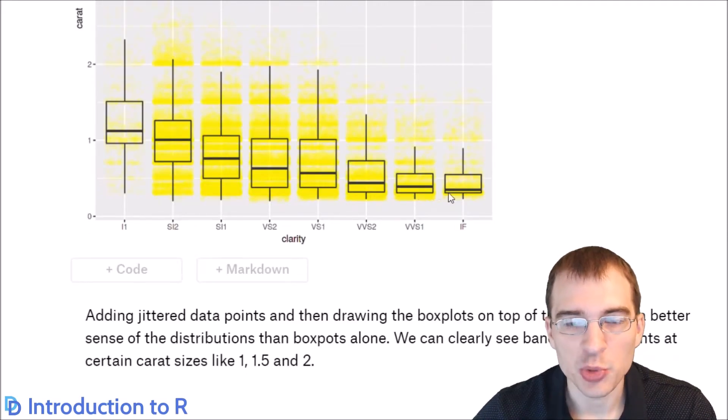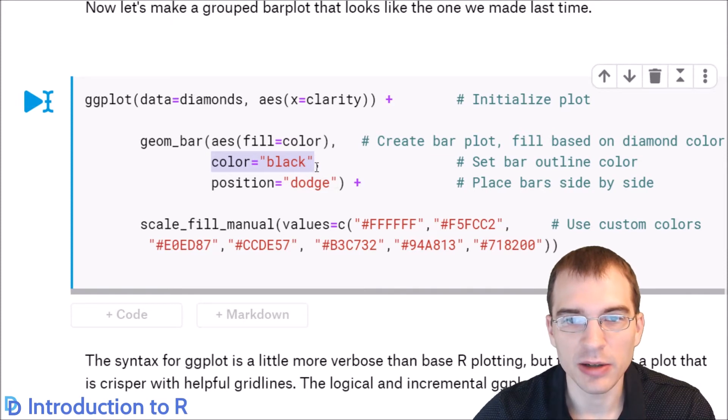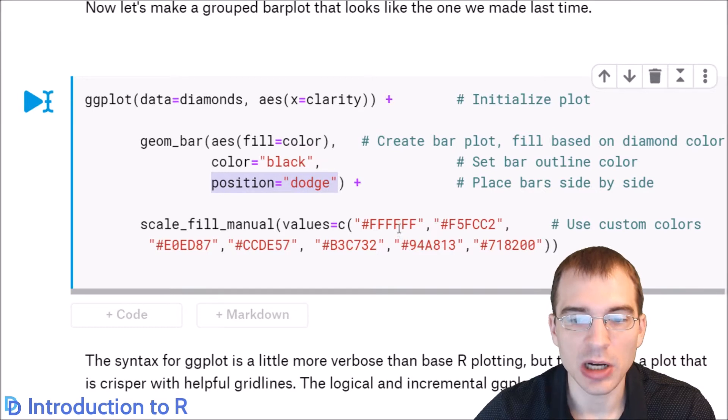Next, we're going to make a grouped bar plot. We start with the call to ggplot with the data and the basic aesthetics. Then we pass in the geom that we want to use. In this case, it's a bar plot, so we're going to use geom_bar. You can pass in additional aesthetics within the geom function call instead of the initial ggplot call. We want to add an extra aesthetic within geom_bar. We're going to set the fill to the color variable. We're going to set color equal to black, which sets the outline of the bars to black. Then position equals dodge places bars side by side instead of stacked on top of each other.